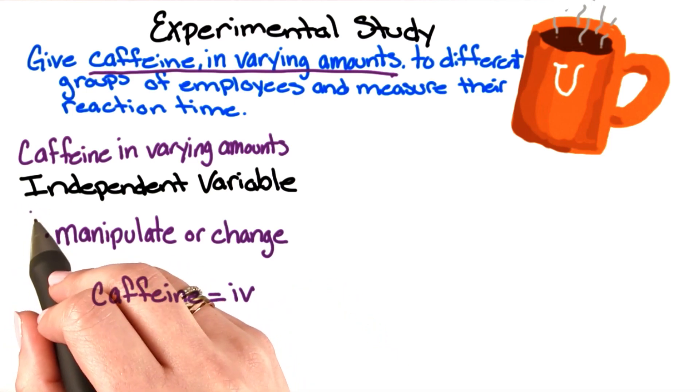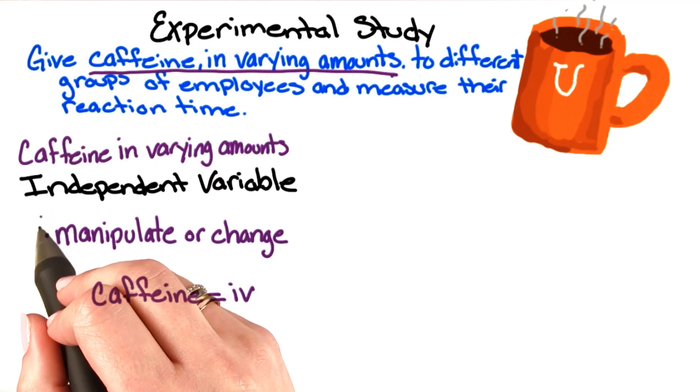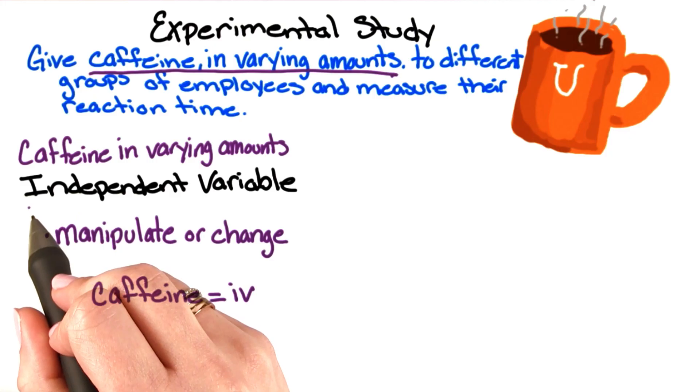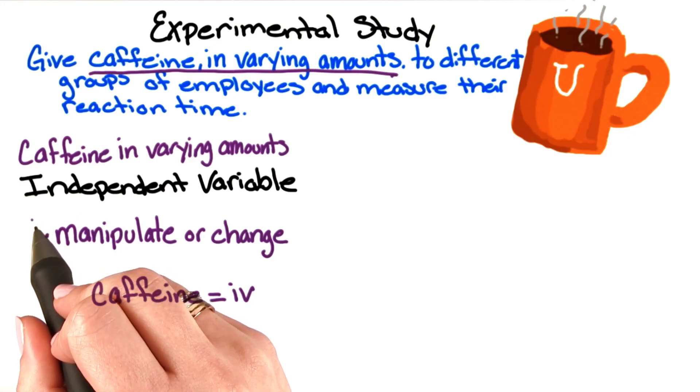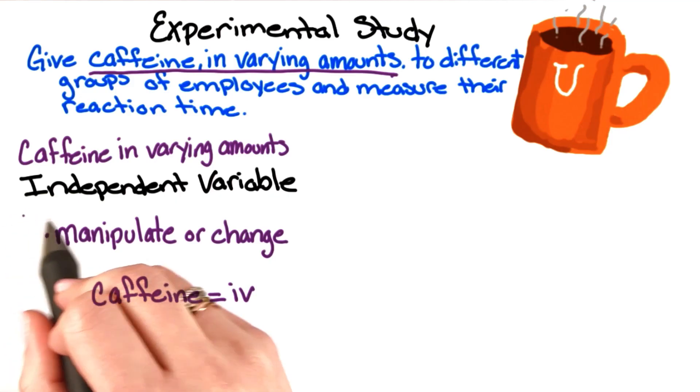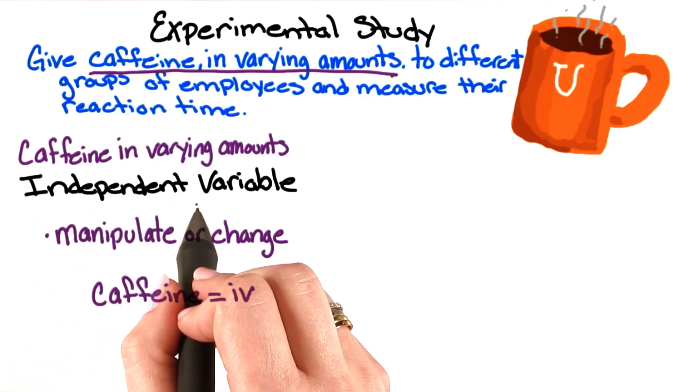An easy way to remember this is that investigator starts with an I, independent variable also starts with an I, and it's the investigator that manipulates the independent variable.